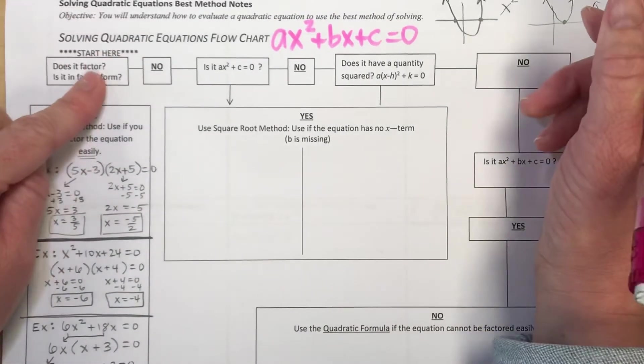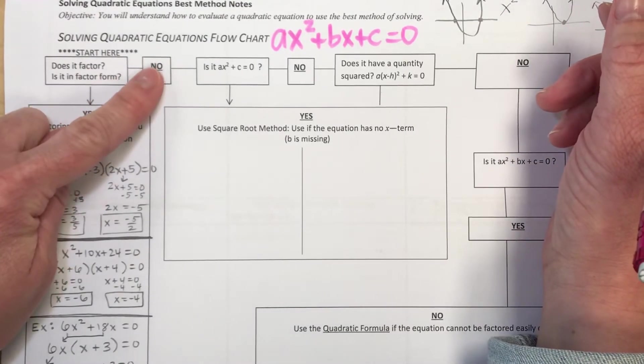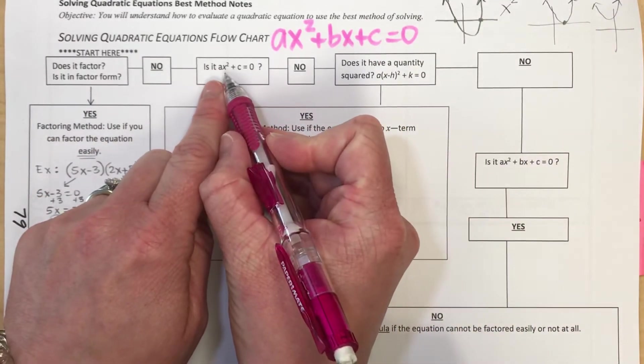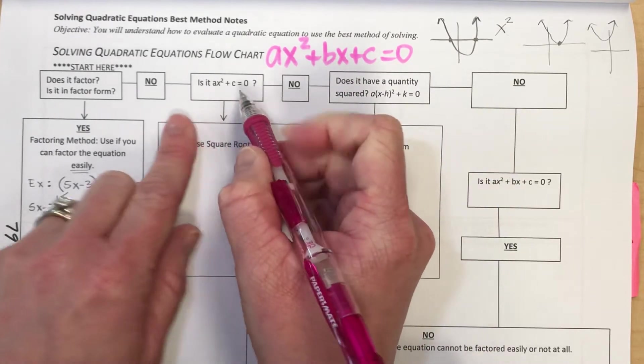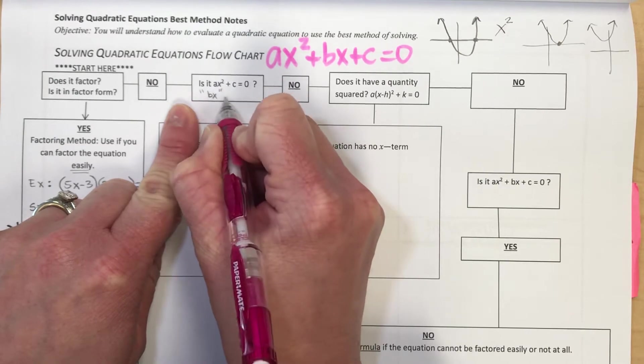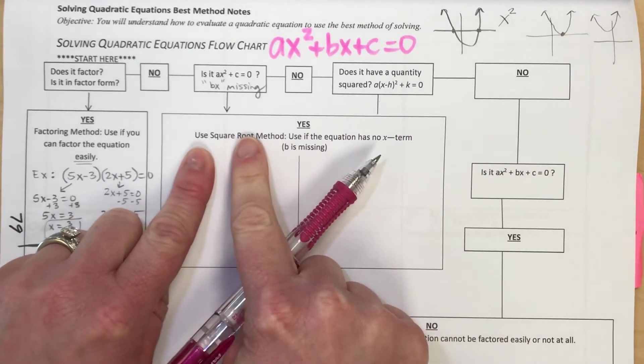Now, if I said, is this possible to factor and you're like, no, I don't really know what to do, then what you would look for is ax² plus no linear term. Notice that bx term is missing here. Then I want to show you how to use the square root method.